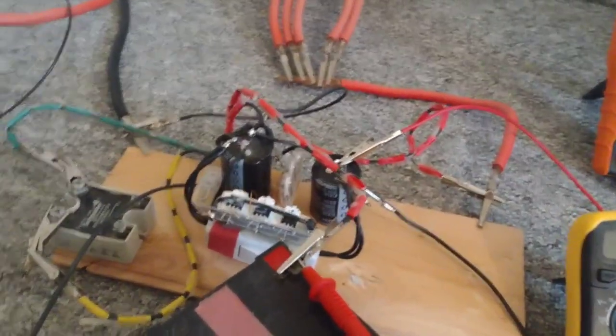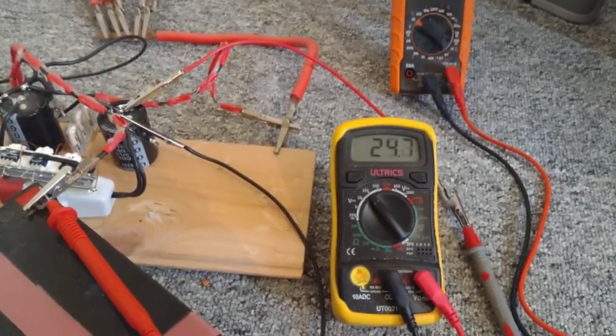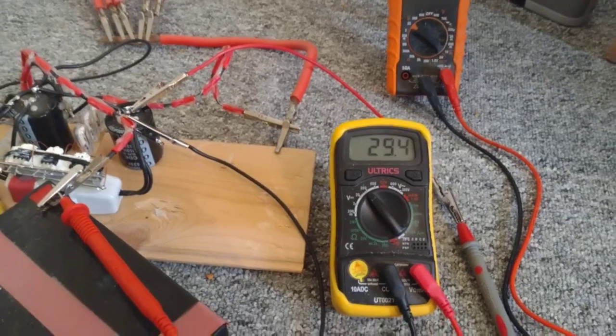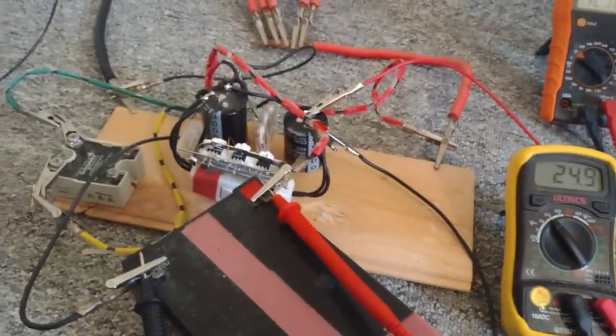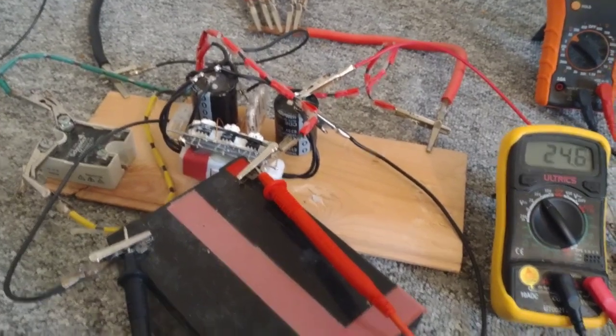It's mainly to do with the bulbs, the type of bulbs you use. Some of the bulbs cause the potential to rise higher than some of the others, and they climb higher. But this one, it discharges much faster.